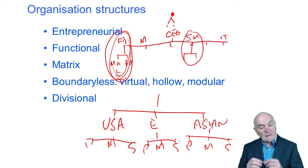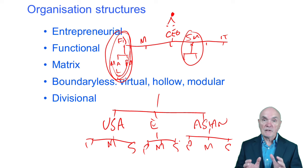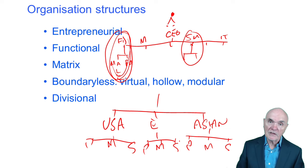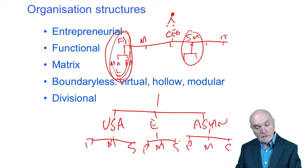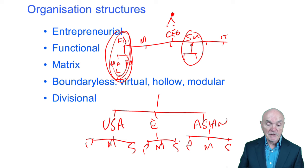But the idea is that you get specialism, you have people who know, in the sales department, they know exactly what the US customers want and what sort of competition there is. In the European division, we know exactly what those customers want and so on. Here we've divided it up in terms of geography. It doesn't have to be in terms of geography.